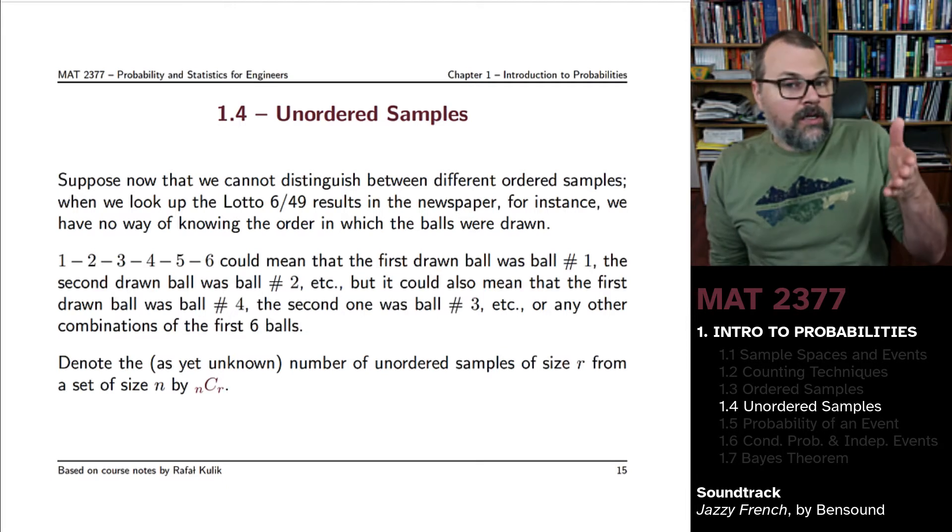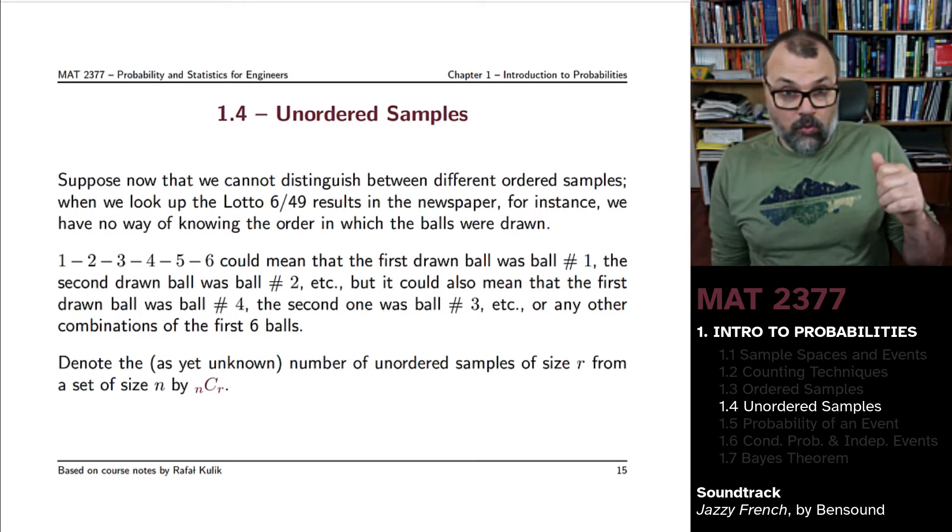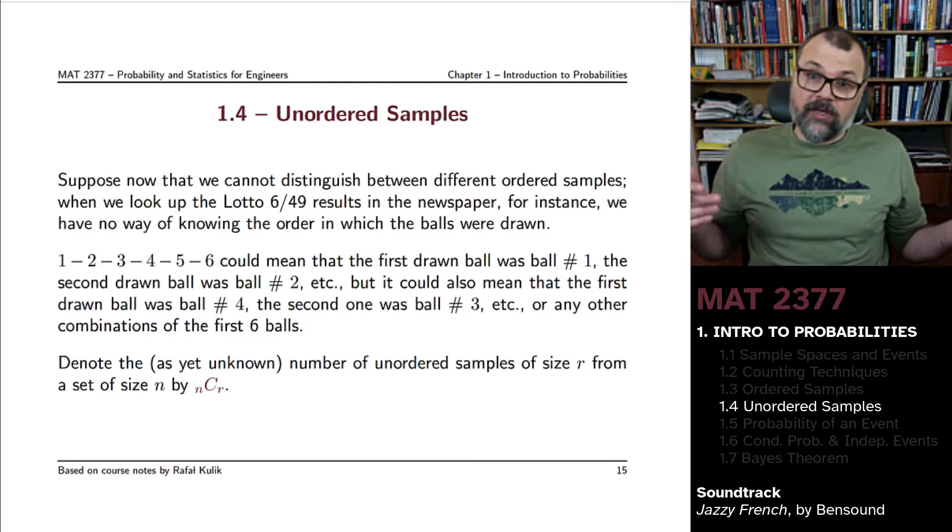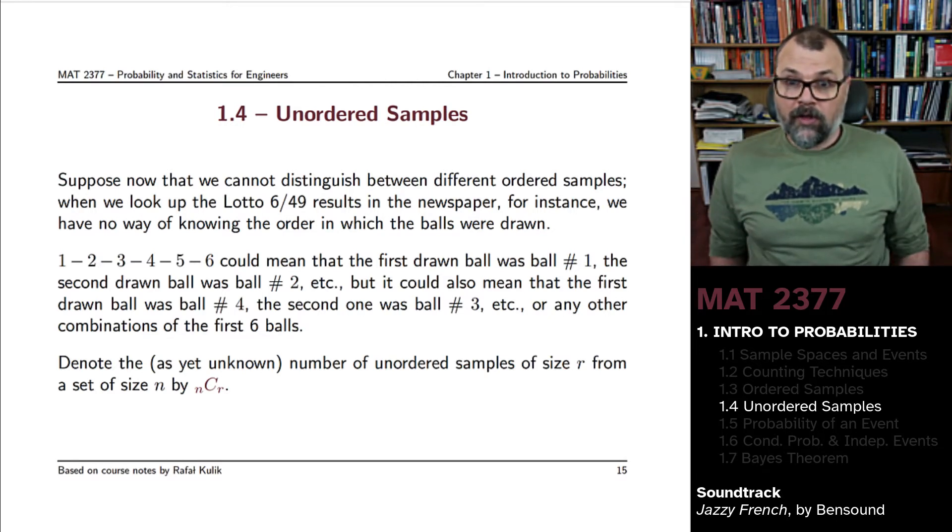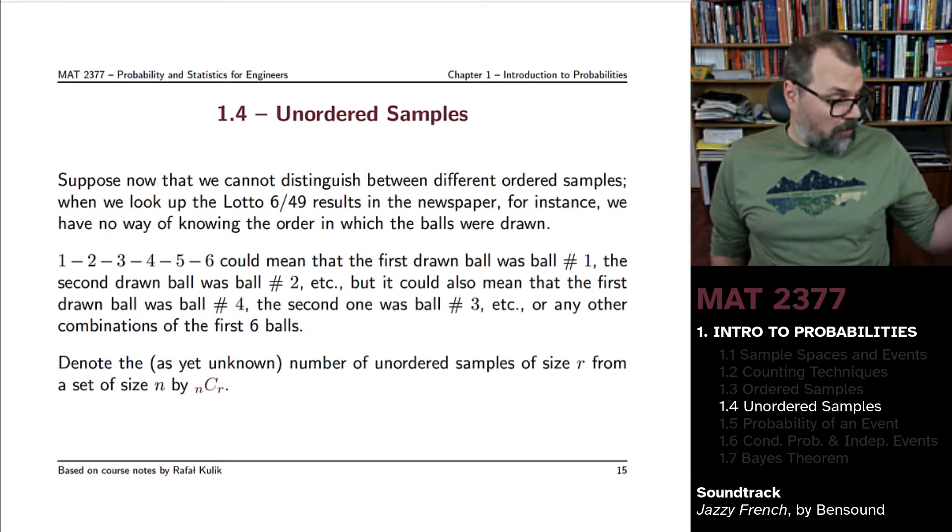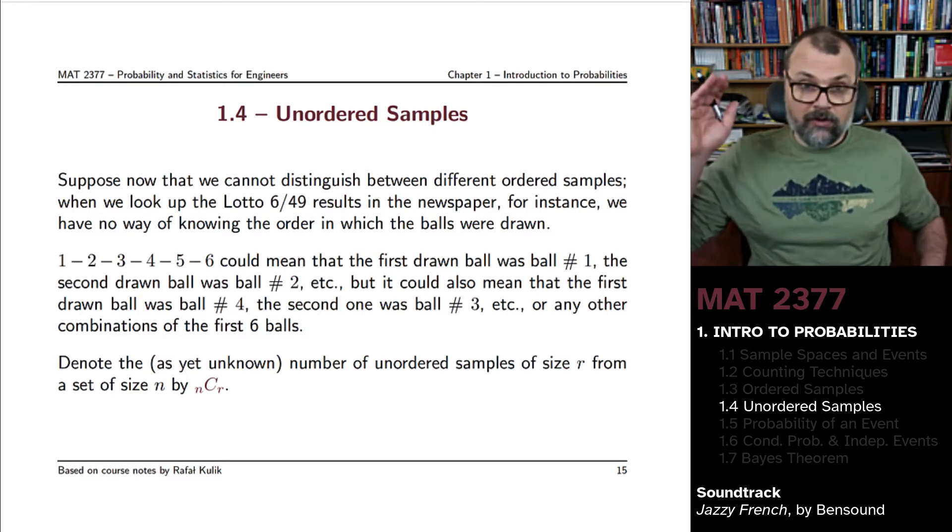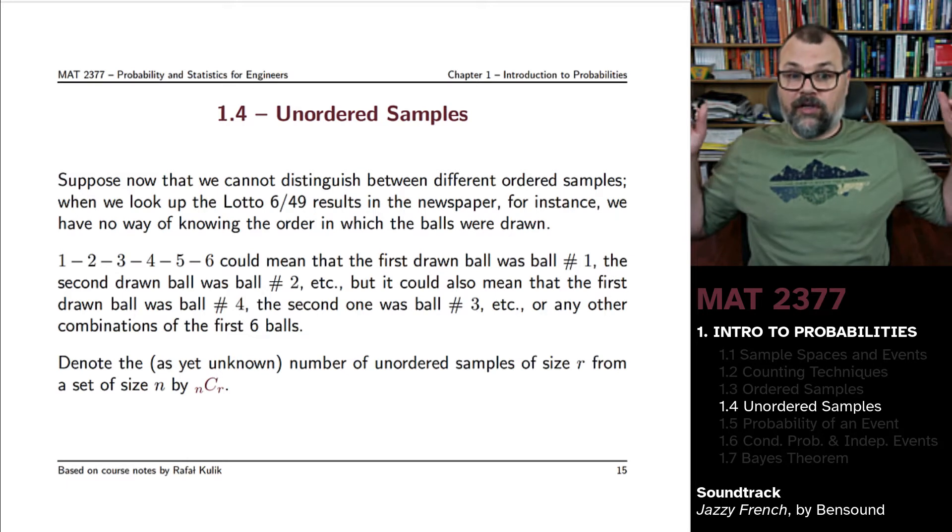If you see the six balls that were drawn were numbered one, two, three, four, five, six, it could mean that the first drawn ball was number one, the second was two and so forth, but it could be that the first ball drawn was number four and the second was number three, or literally any other combination you can think of.